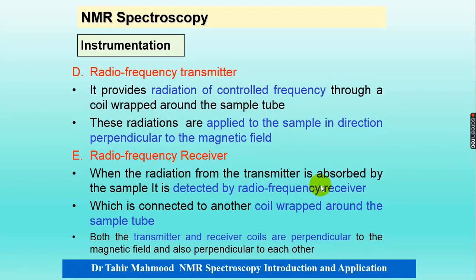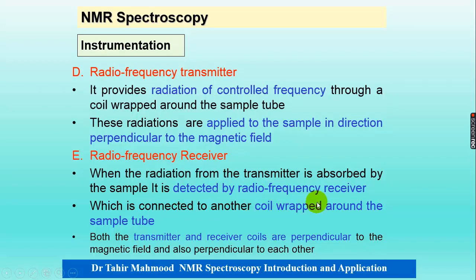The radio frequency transmitter provides radiation of controlled frequency through a coil wrapped around the sample tube, and these radiations are applied to the sample perpendicular to the magnetic field. Similarly, the radio frequency receiver detects the radiation absorbed from the transmitter via another coil wrapped around the sample tube. Both coils are perpendicular to each other and also perpendicular to the magnetic field.